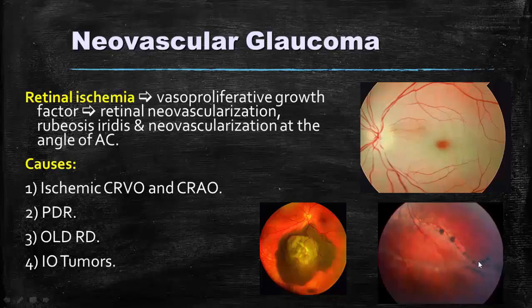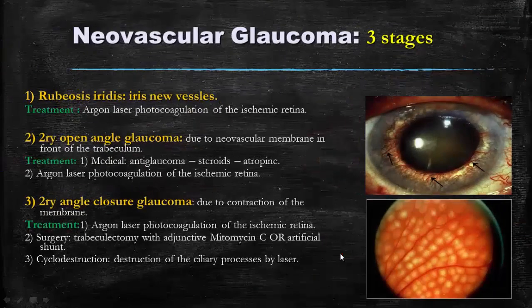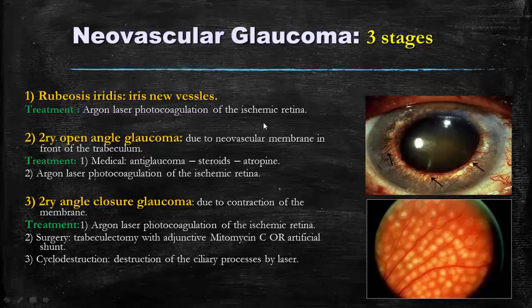Here we can notice old retinal detachment with pigmentation marks, and here we can notice an intraocular tumor and choroidal melanoma. Neovascular glaucoma has three stages. The first stage is new vessels at the iris, called rubeosis iridis — here new vessels are only present in the iris. Treatment here is by laser photocoagulation of the ischemic retina to decrease new vessel formation.